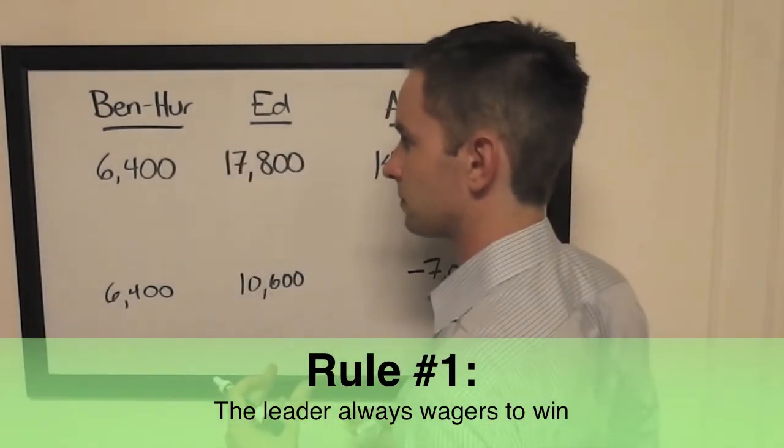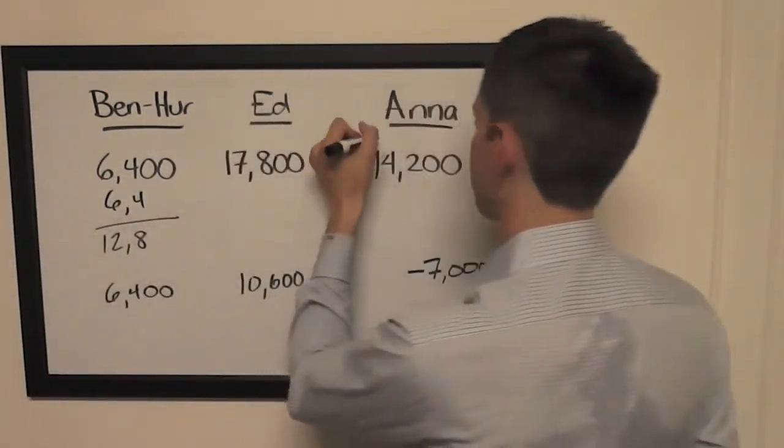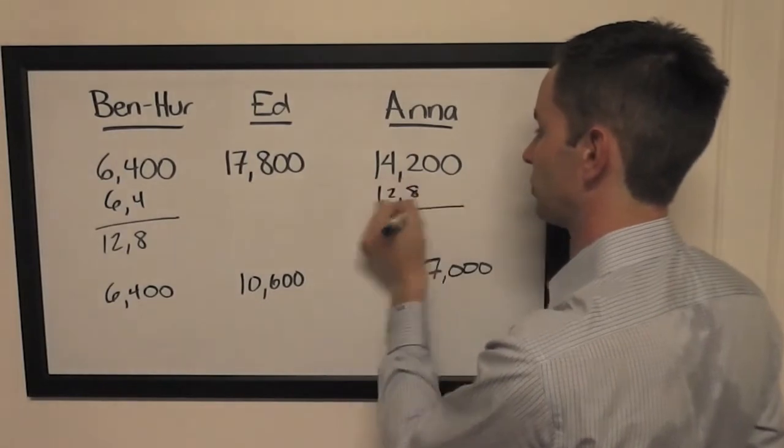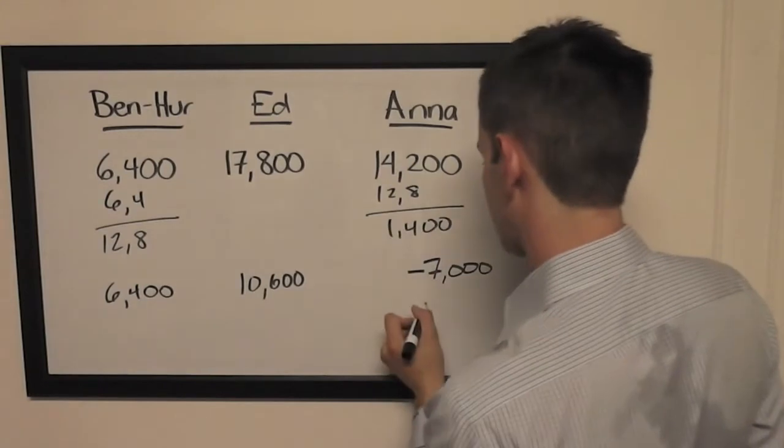If he doubles up, he's going to have 12,800. Man, I hope he wins tonight so I can keep doing this. Anna to stay above him can wager up to 1,400.